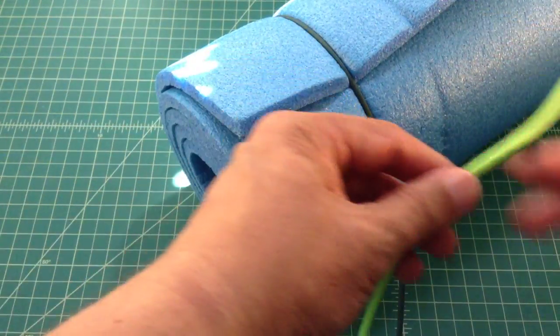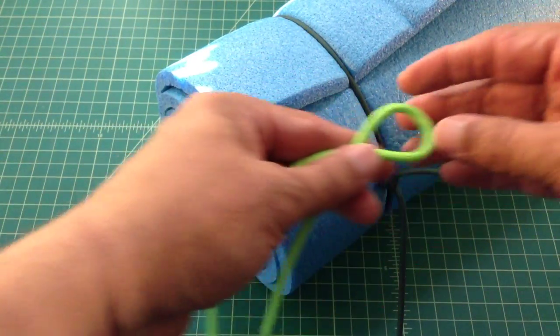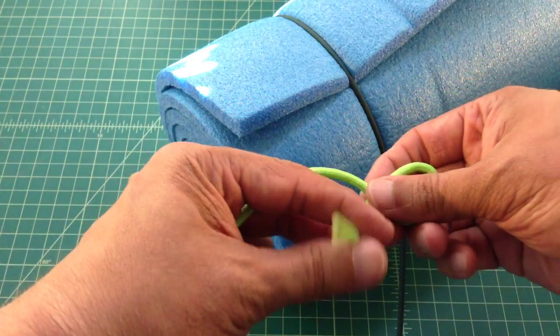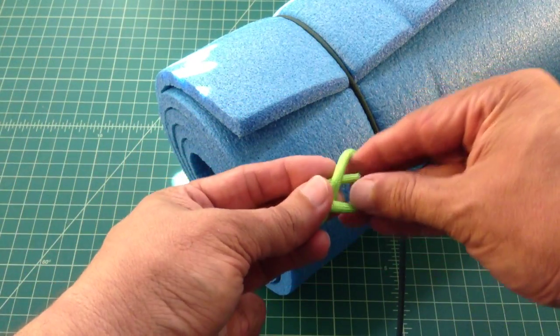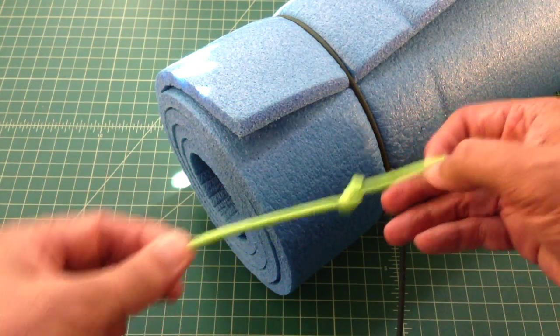Alright, let's see if I can do this. So what I want to do, the first thing I'm going to do is tie my stopper knot. So I make a loop, come over and through. And then my figure eight stopper done.